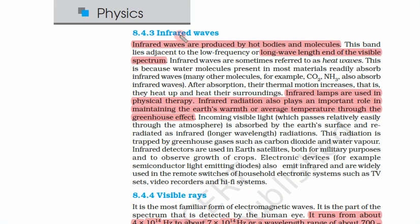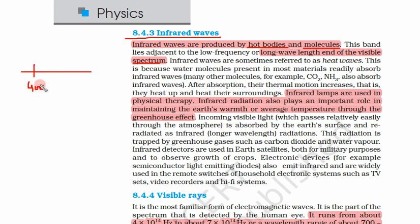The next type of radiation is infrared rays. Infrared waves are produced by hot bodies and molecules. Previously we learned about radio waves with very large wavelength, then microwaves; now we are learning about infrared waves. This band lies adjacent to the low-frequency or long-wavelength end of the visible spectrum. The visible spectrum starts at 400 nm and ends at 700 nm in terms of wavelength.